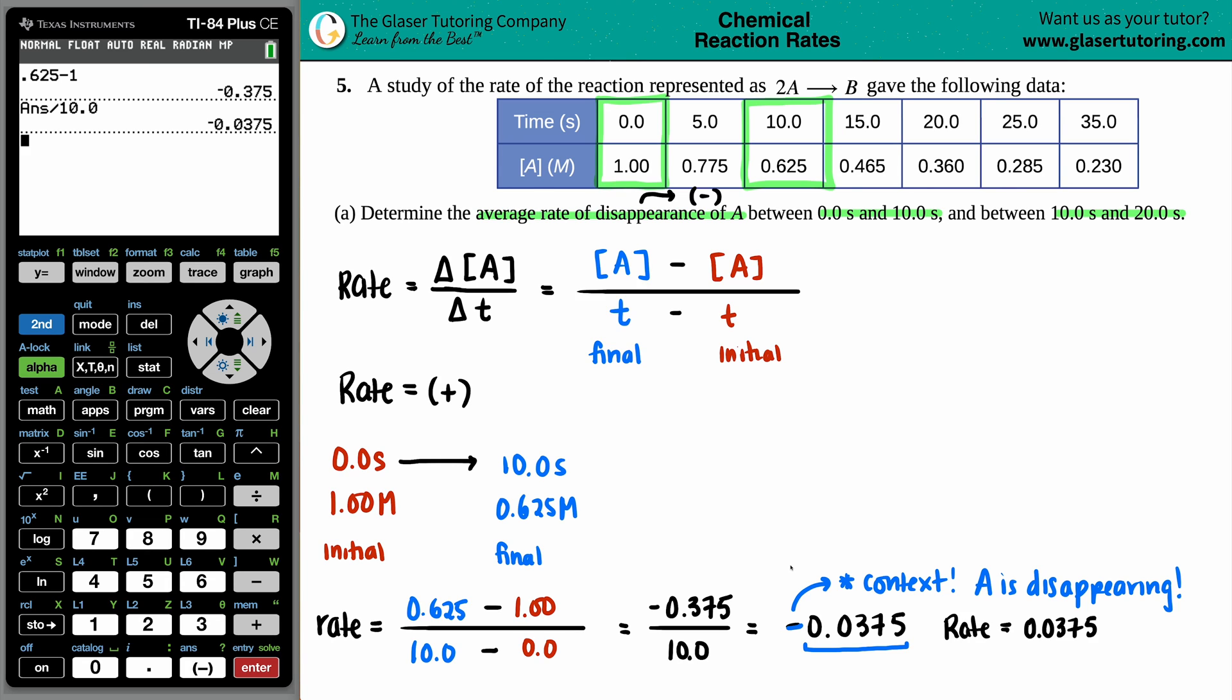My rate value is only the positive value. The rate would be 0.0375 - the negative just says that A is disappearing at a rate of 0.0375. We wouldn't say it's disappearing at a rate of negative 0.0375, because a rate value is always positive. The negative just means it's disappearing. For units, we have molarity divided by time, so molarity per second for compound A.